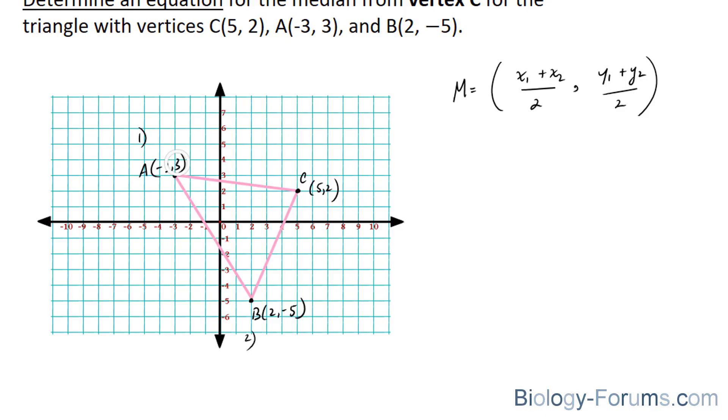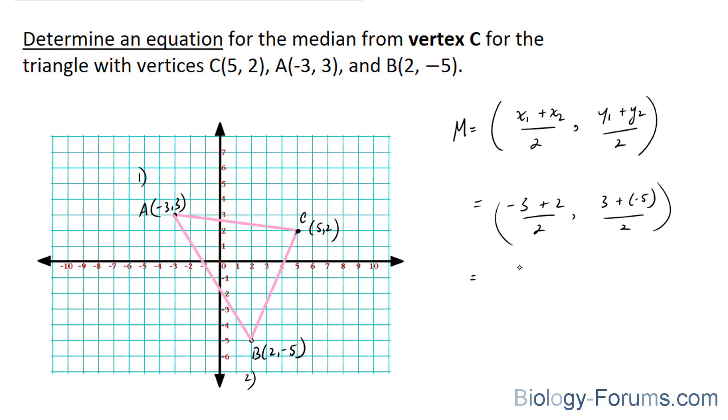So let's call this x1, y1, x2, y2. Negative 3 plus 2 over 2 and 3 plus negative 5 over 2 equals...